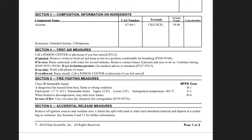Section four: first aid measures. Call poison control or a physician if you're feeling unwell. If inhaled, remove the victim to fresh air and keep them in a position comfortable for breathing. If you get it in your eyes, rinse cautiously with water for several minutes, remove contact lenses if you have them, and continue rinsing — if eye irritation persists, get medical attention. If it's on skin, wash. If it's swallowed, call poison control.